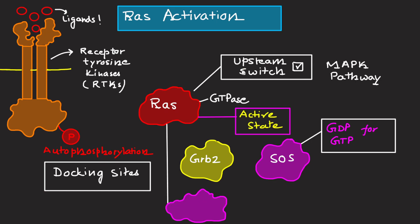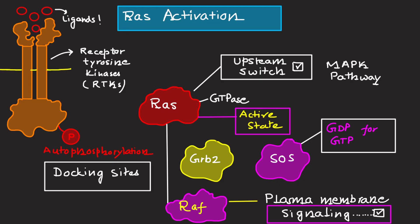Once activated, RAS interacts with downstream effectors and is recruited to the plasma membrane, initiating the next step in the signaling cascade. This activated RAS will further drive the downstream signaling pathway.